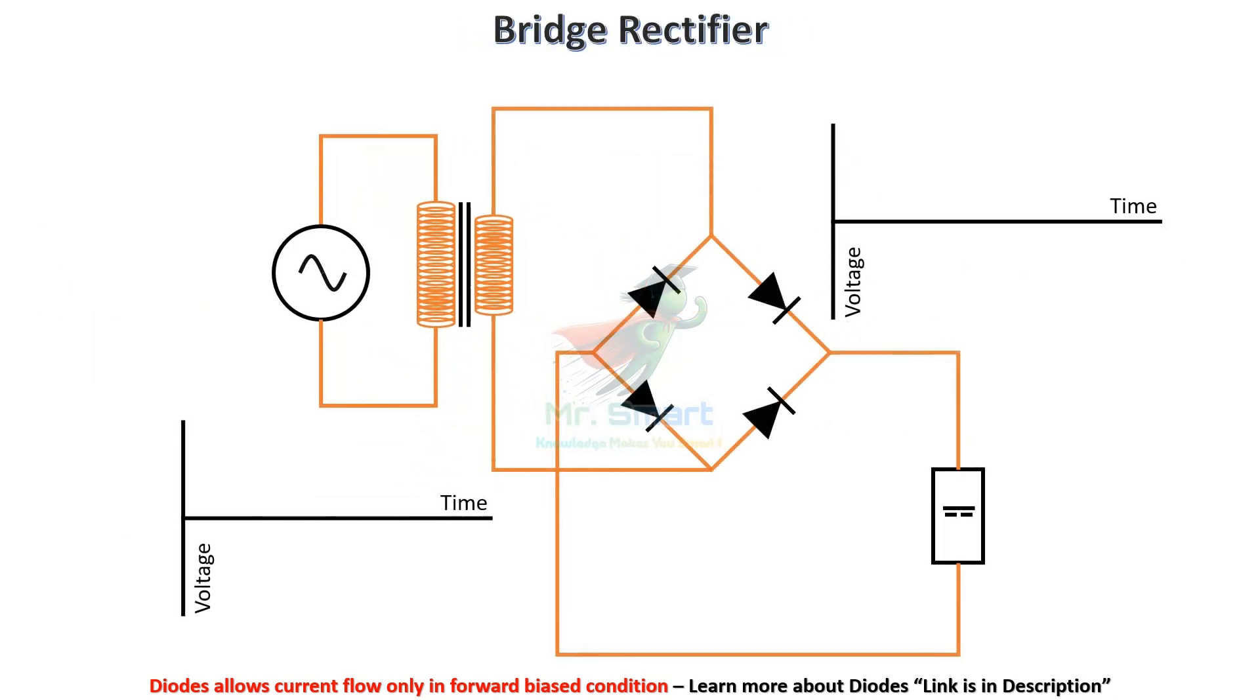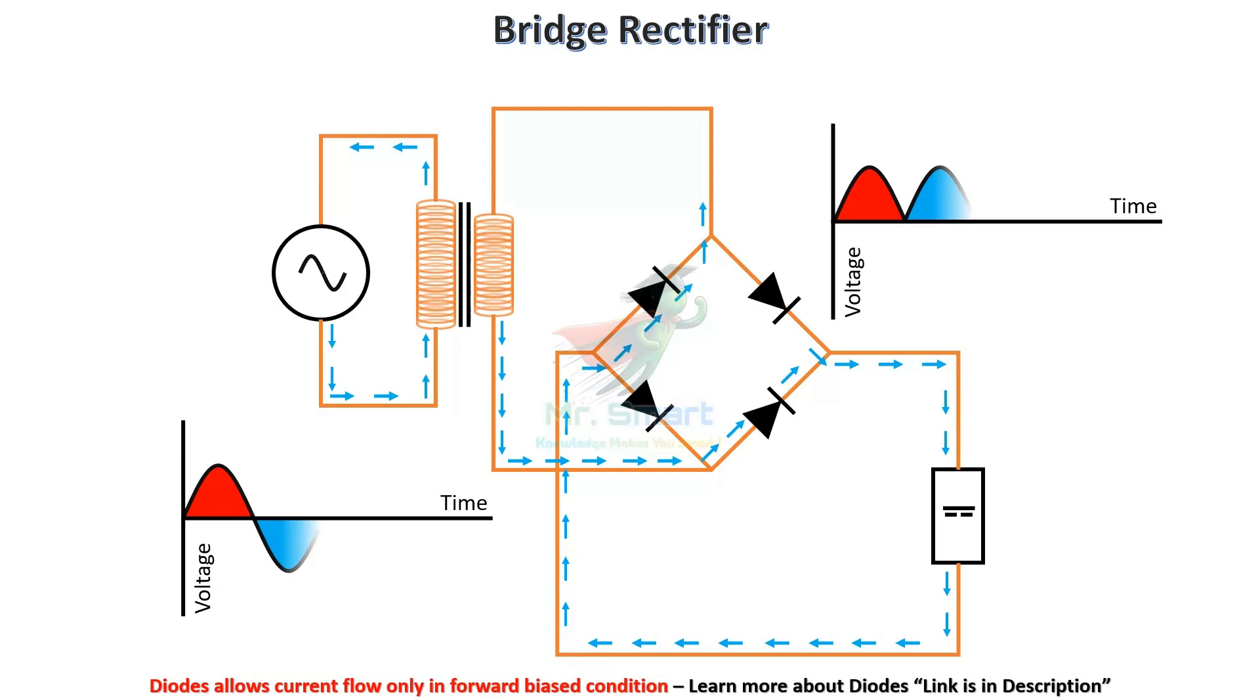A bridge rectifier is one of the most popular types. It uses four diodes, arranged in a bridge configuration to convert both halves of the AC wave to DC, without needing a center-tap transformer. It is the more effective rectifier among the three, in terms of output.